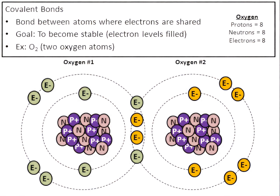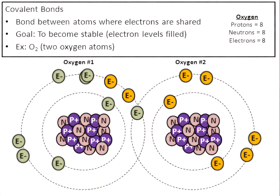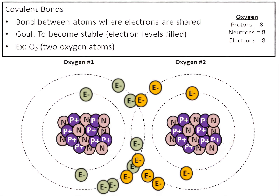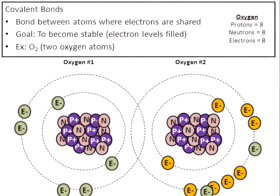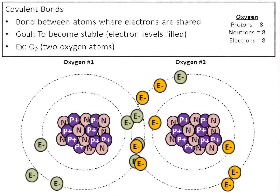Oxygen number two has one, two electrons in the first level — stable. Look at the outside level: one, two, three, four, a shared fifth, six, seven, a shared eighth. Because they're sharing electrons, oxygen number two's outside level is now stable. Those shared electrons are zigzagging back and forth in a figure eight. Because of this sharing, both oxygen number one and oxygen number two have filled outside levels. That's a covalent bond.